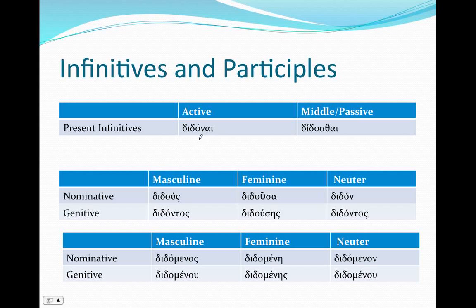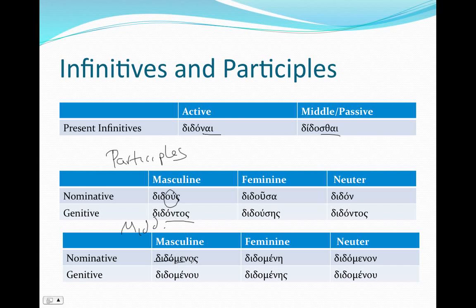Infinitives and participles — short stem again: 'ni,' just like we had with deiknumi, 'nu,' 'ni,' and 'sthi.' And then in the participles: didous, didousa, didoun. This is a long version, but then we go back to our stem: didontos. Didous, didontos. And in the middle and passive, we get our stem 'dido' with the 'men' ending: didoomenos, didomeni, didoomenon.